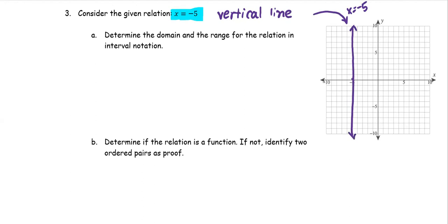Determine the domain and range for the relation in interval notation form. From the graph, we can see that the domain would be just one number, the domain is just the set of that number, negative 5. And the range would be the set of all real numbers, and you can write in interval notation form as negative infinity to positive infinity.